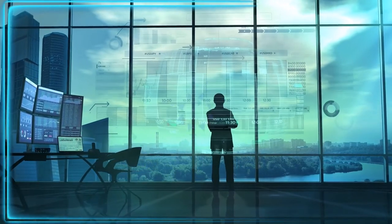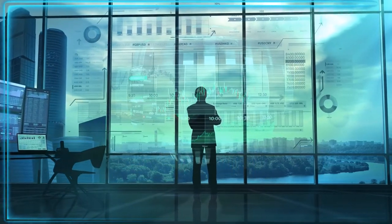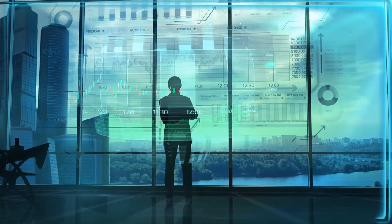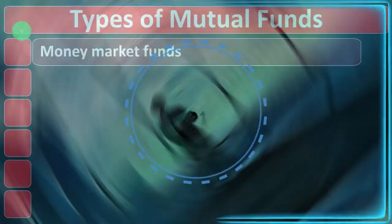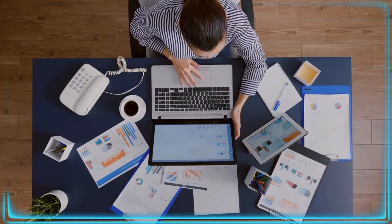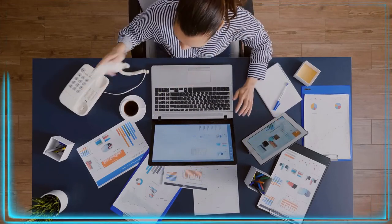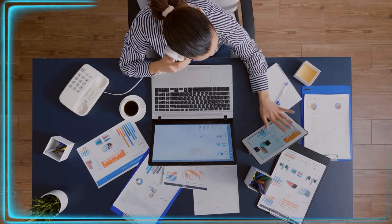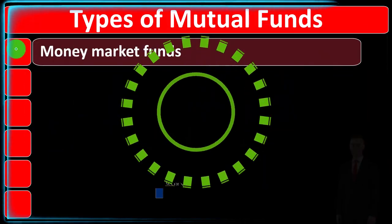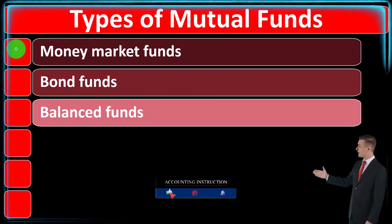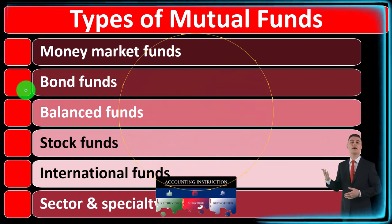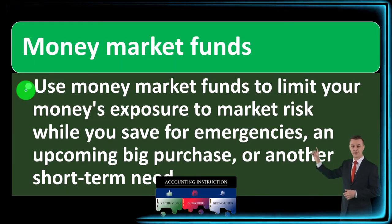Now we want to think about what kind of mutual funds to put money into. Should we find one mutual fund that covers all our needs, like a targeted fund? Should we use managed funds or index funds? To answer those questions, we need to look at the different types available. Looking at something like Vanguard can help. The main categories are: money market funds, bond funds, balanced funds, stock funds, international funds, and sector and specialty funds.